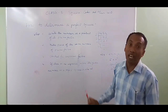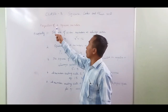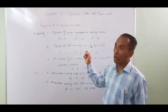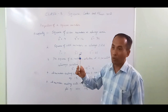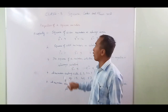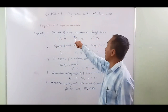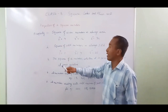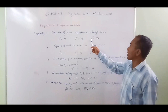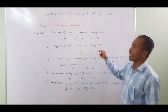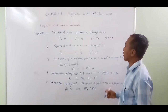While studying squares, we must know the properties of square numbers. Property 1: the square of an even number is always even. For example, 2 squared is 4, 4 squared is 16, 6 squared is 36, 8 squared is 64 — all even. Property 2: the square of an odd number is always odd.